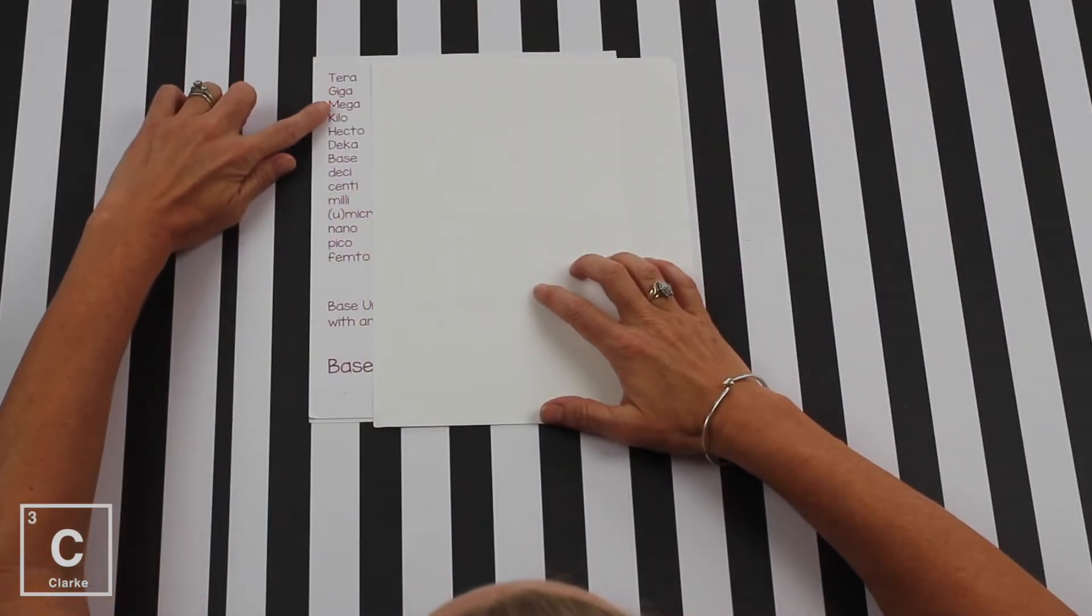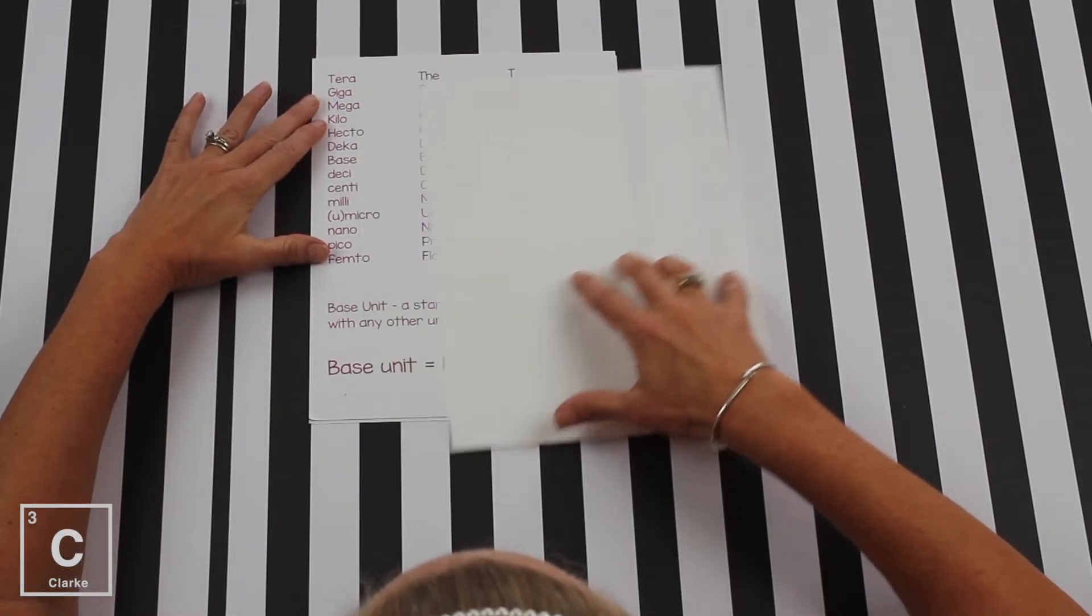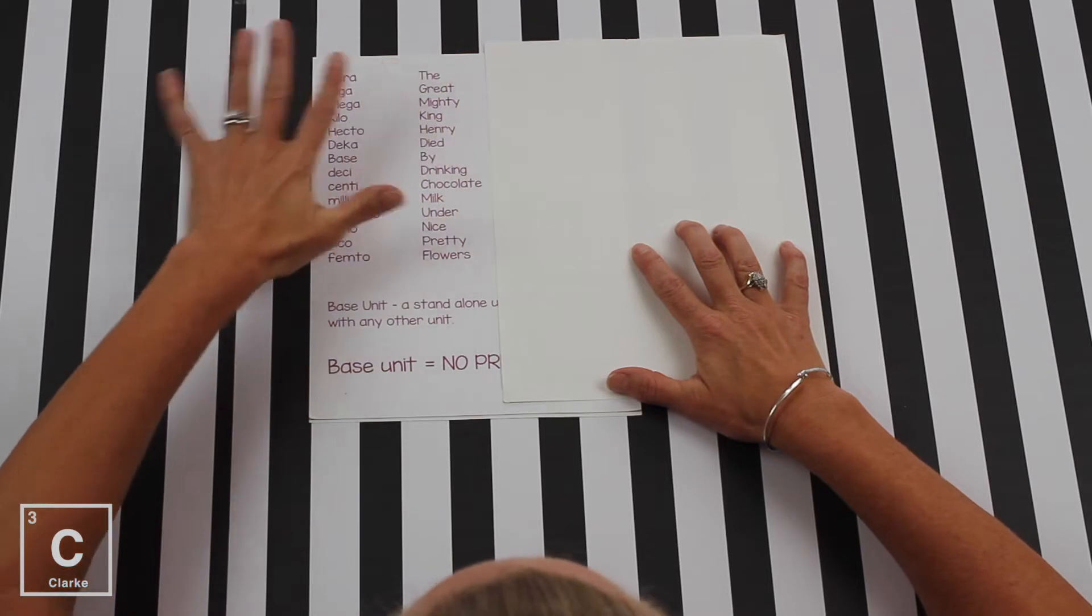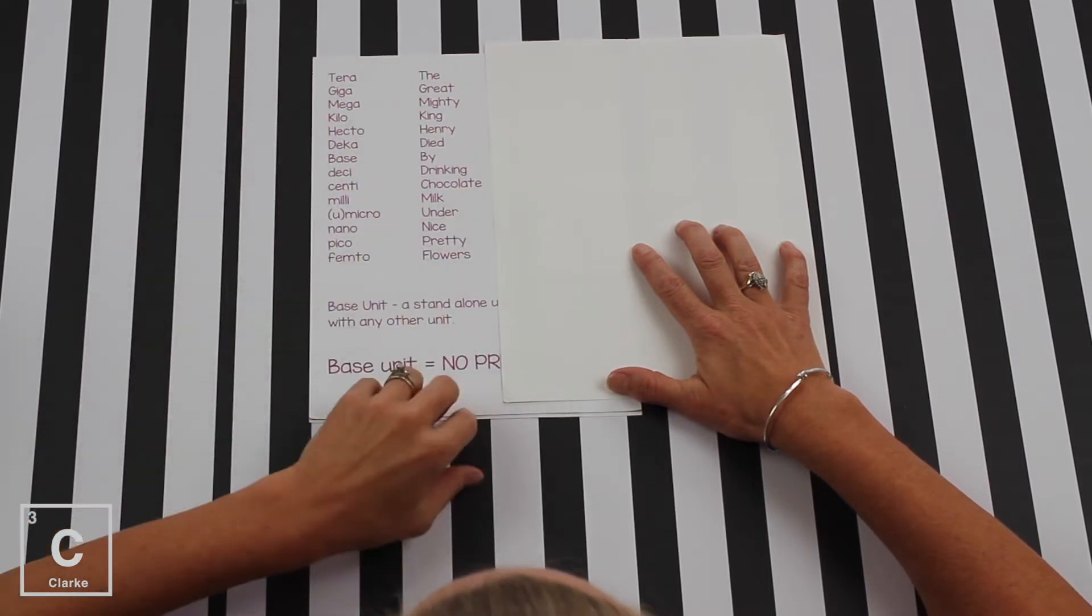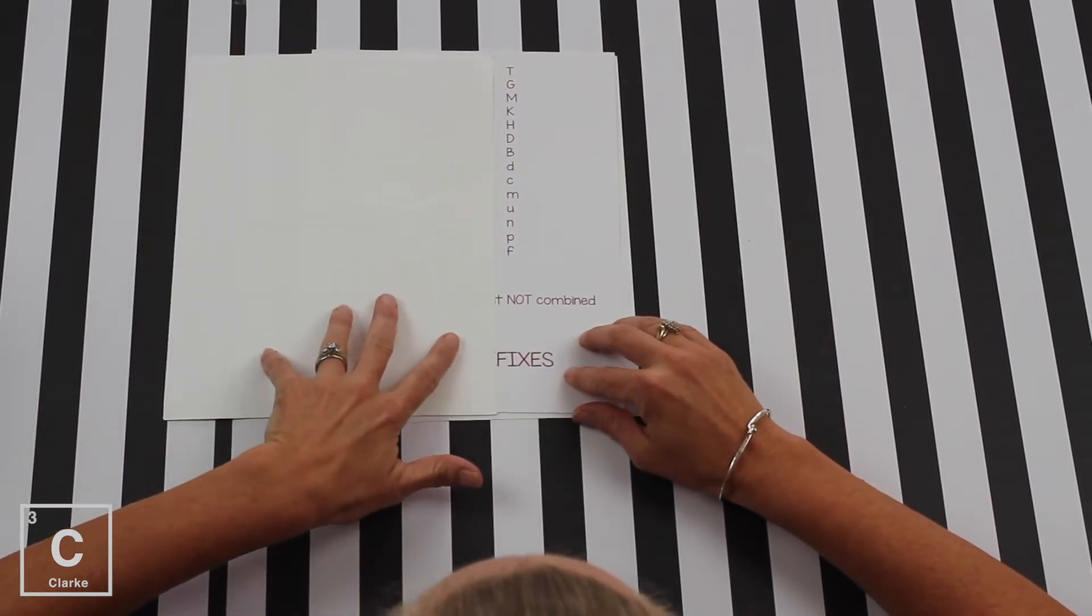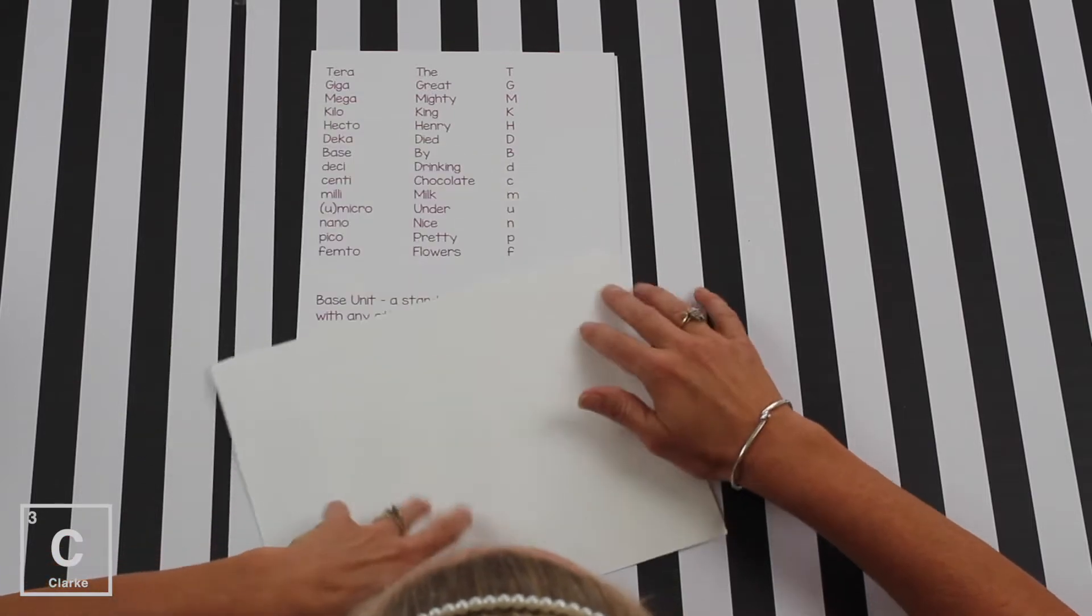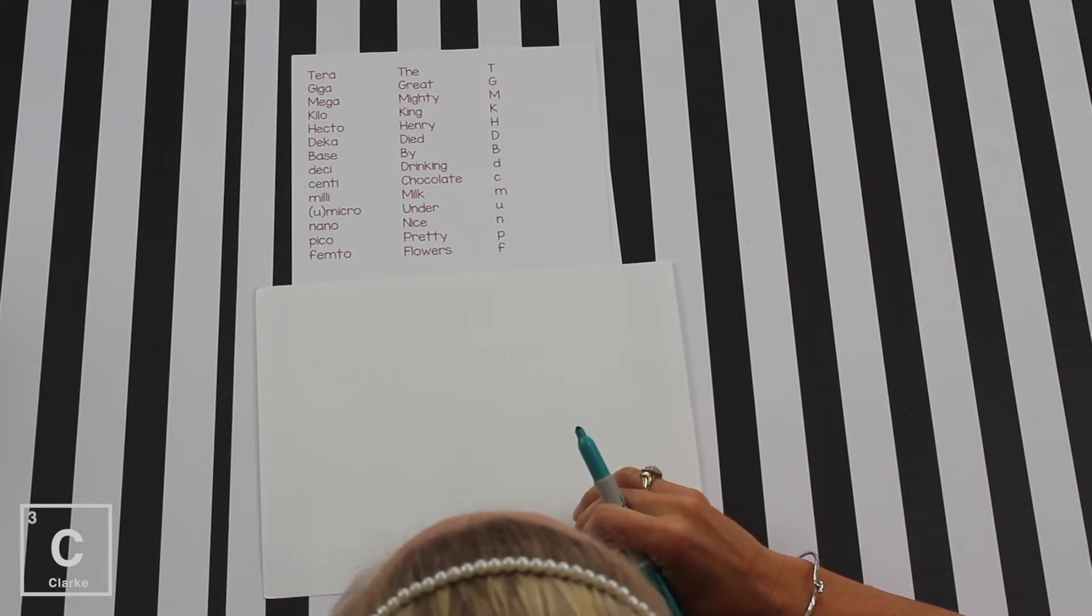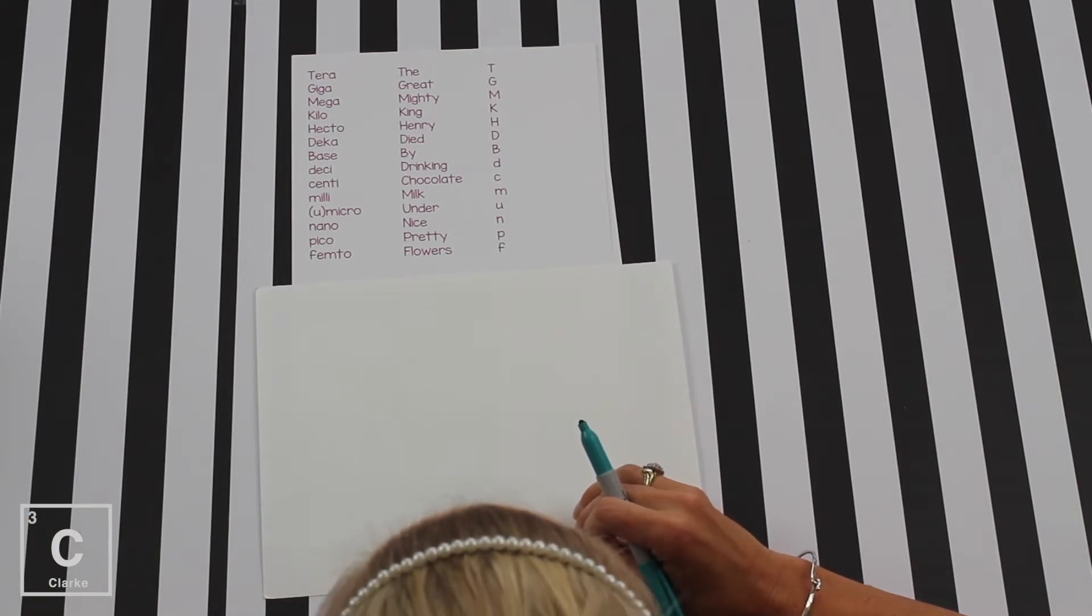This looks super complicated. And when I'm getting ready to make conversion factors with the metric system, I never use this. Let me show you what I do. This is my hack. We've got the terra, giga, mega all the way down to femto. Here's our great, the great and mighty King Henry. Now, I don't write any of this on my paper. This is what I write on my paper. When I'm getting ready to work problems, I write this on my paper every single time. Because that's going to be what helps you to memorize it.